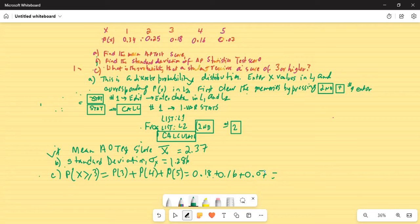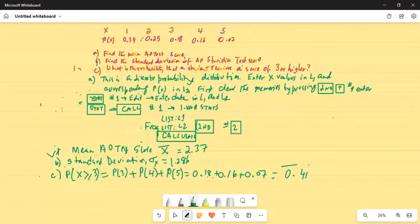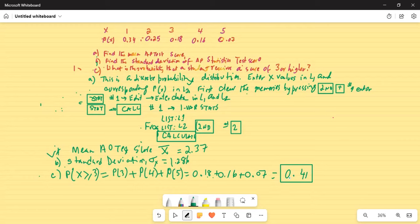And the answer is 0.41. So there is a 41% chance that a student will receive a score of 3 or higher.